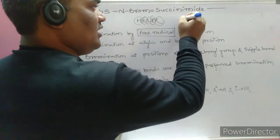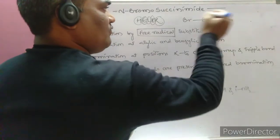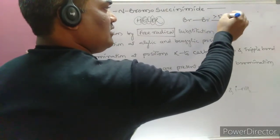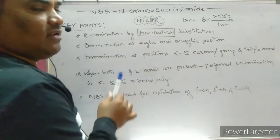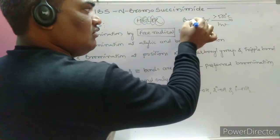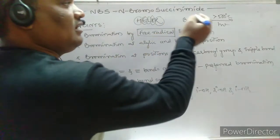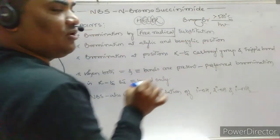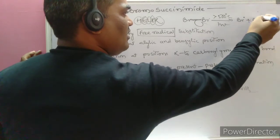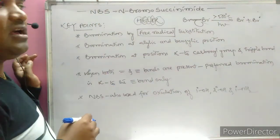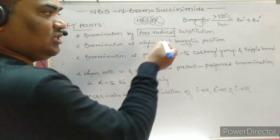In free radical mechanism, Br2 is present. When any HELPER condition is given — such as greater than 500°C, sunlight, UV radiation, light, peroxide, or radical — the covalent bond breaks homolytically. Each atom takes back the electron it contributed, generating two Br radicals. This is called homolysis or homolytic fission. Bromination occurs at both allylic and benzylic positions.